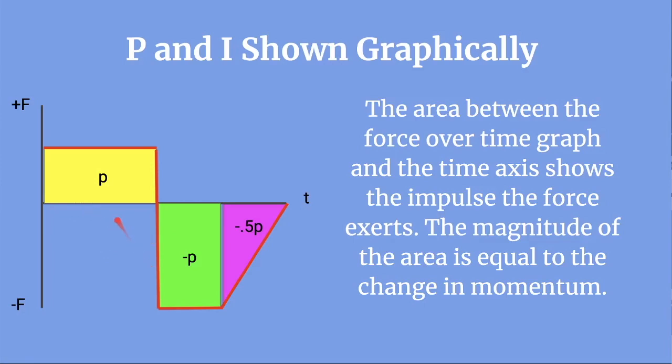Remember that areas over the x-axis are positive and areas under the x-axis are negative. Here, if yellow and green have the same equal area and we assign them the arbitrary value p, with yellow being positive and green being negative, we can see that they obviously cancel out. And then we're left with the net area of pink, or a net change in momentum equal to negative 0.5p.